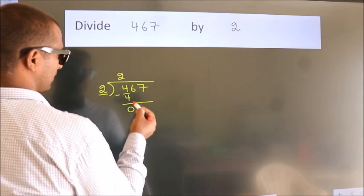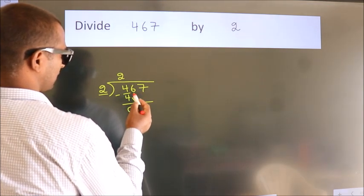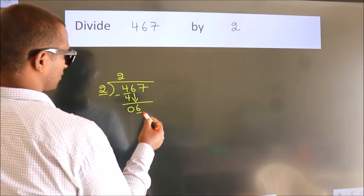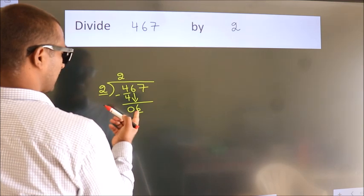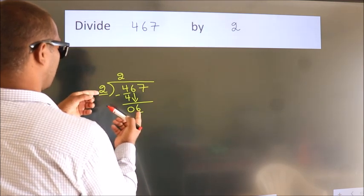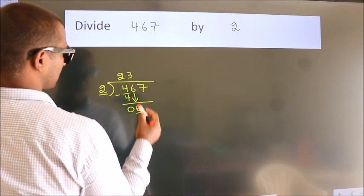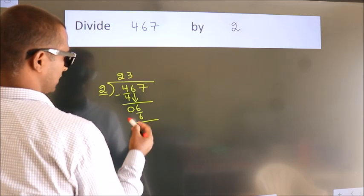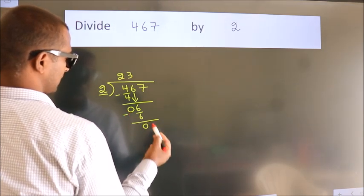After this, bring down the beside number. So, 6 down. When do we get 6? In 2 table. 2 times 3 is 6. Now, we subtract. We get 0.